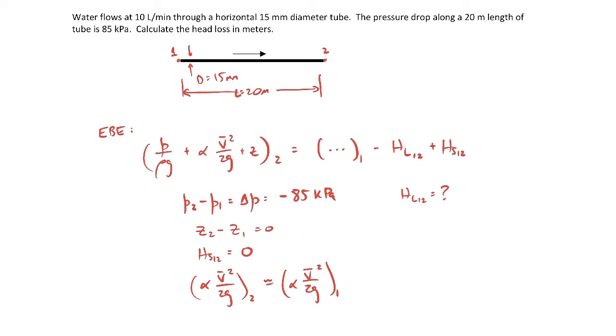We don't even have to assume about the alphas. If we calculate the Reynolds number at each location, the Reynolds number is the average velocity times the diameter divided by the kinematic viscosity. The velocity is the volumetric flow rate divided by pi over 4 d squared. Substituting that in, the Reynolds number would be 4 times q all over pi times d times the kinematic viscosity.